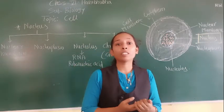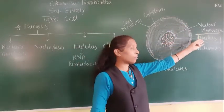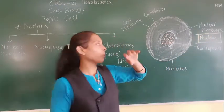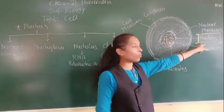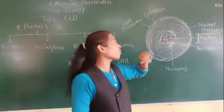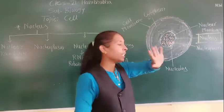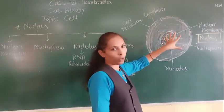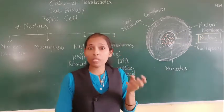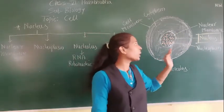Now we will discuss the nucleus in more detail. The nucleus is the central spherical structure present in the cell. In the plant cell it is present at the periphery, while in the animal cell it is present in the center of the cell.